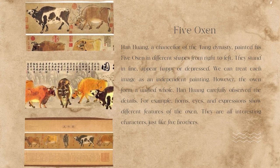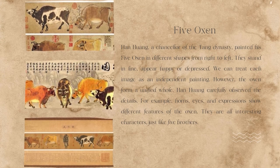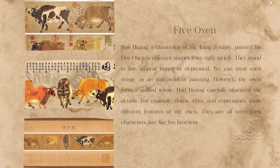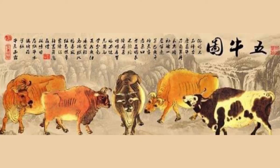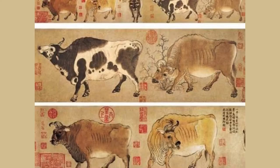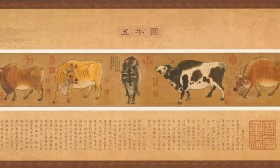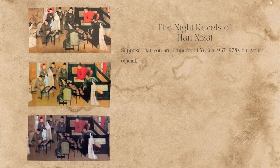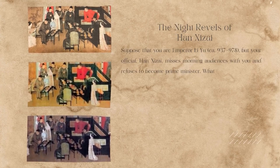The fourth is Five Oxen. Han Huang, a chancellor of the Tang dynasty, painted these five oxen in different shapes. From right to left they stand in line, appearing happy or depressed. We can treat each image as an independent painting; however, the oxen also form a unified whole. Han Huang carefully observed the details — for example, the horns, eyes, and expressions show different features of each ox.